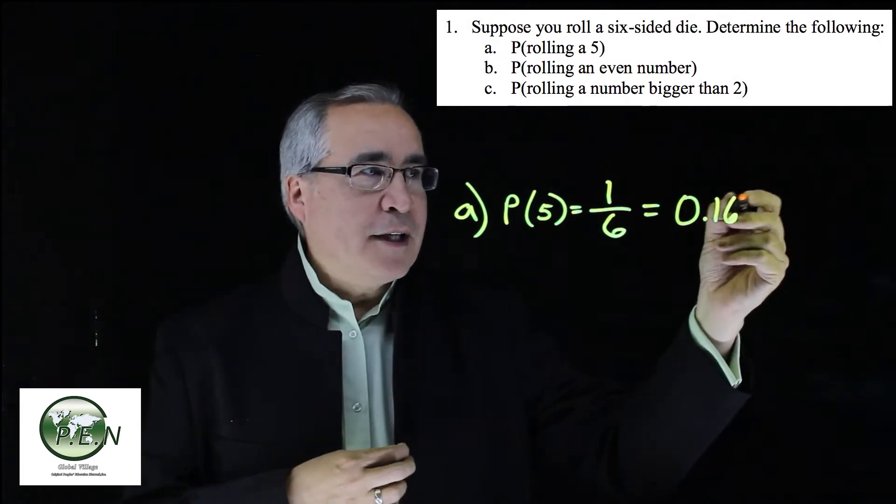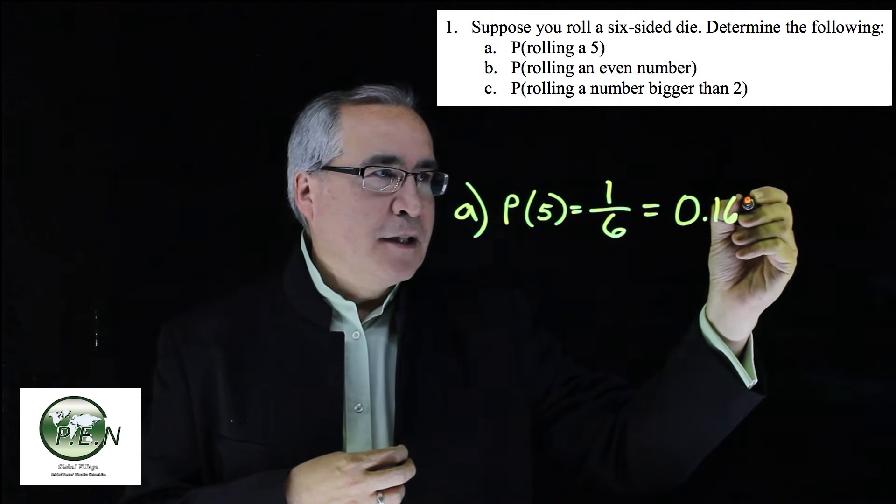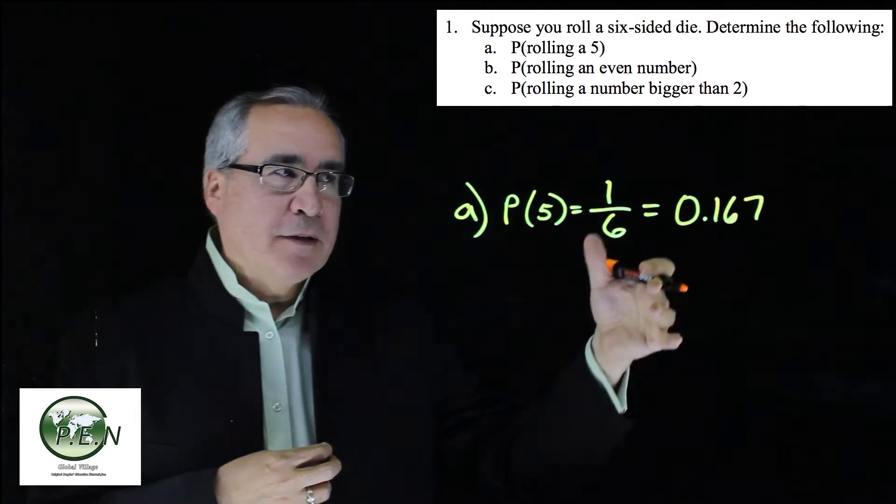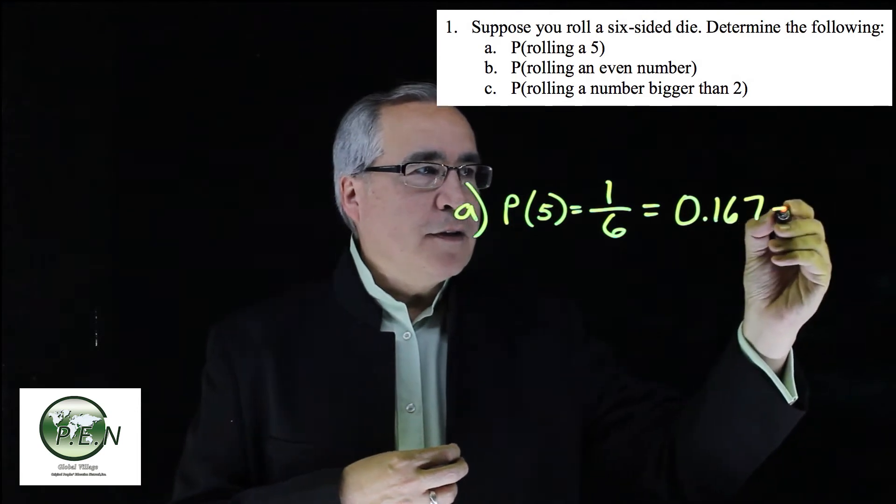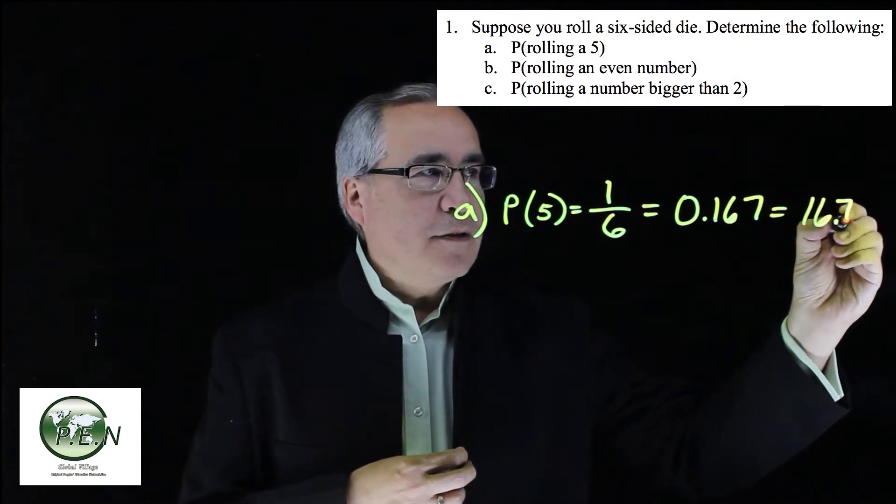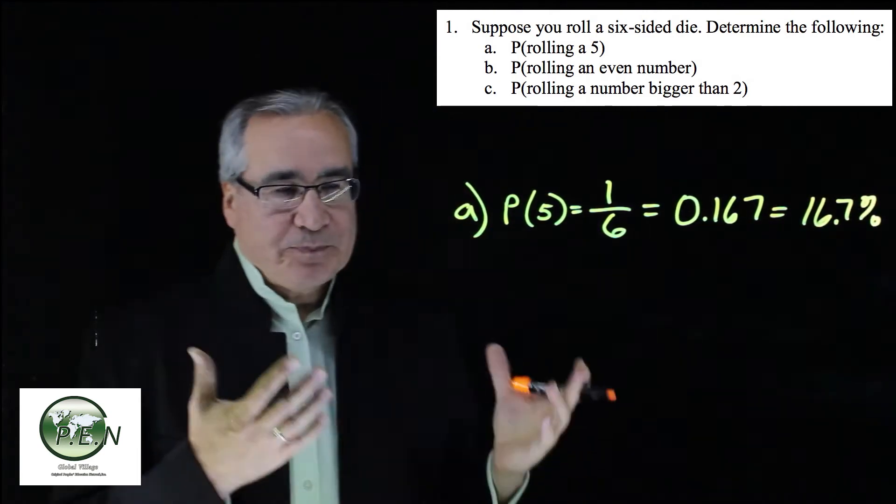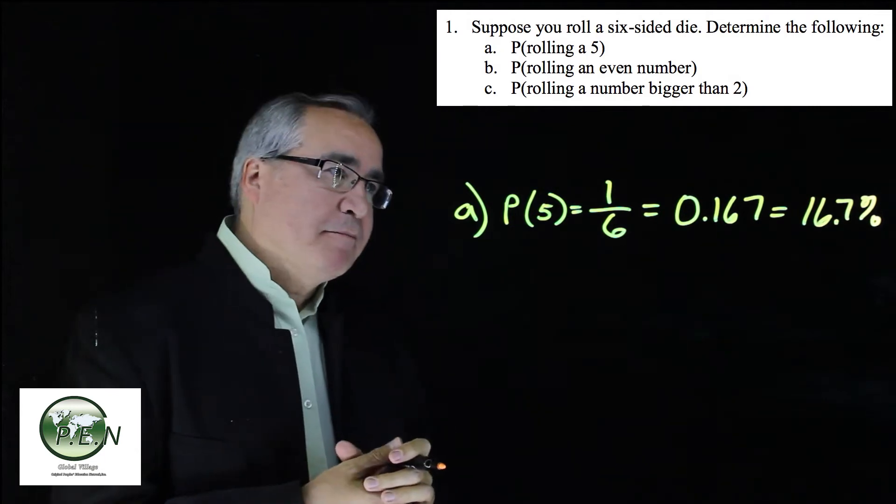Multiply by 100, moves the decimal over two places. We get 16.7%. Not bad, but not great.